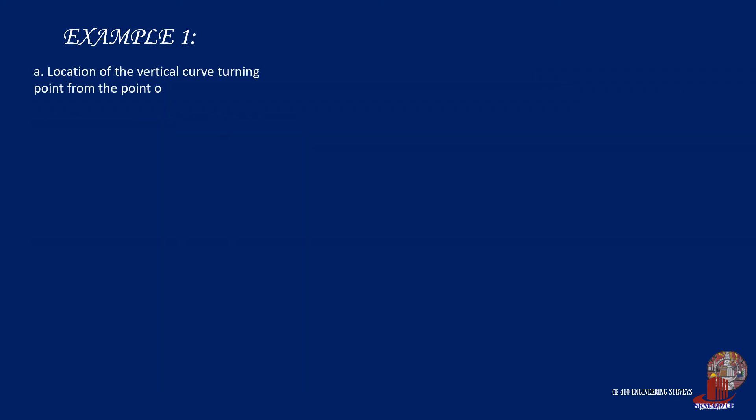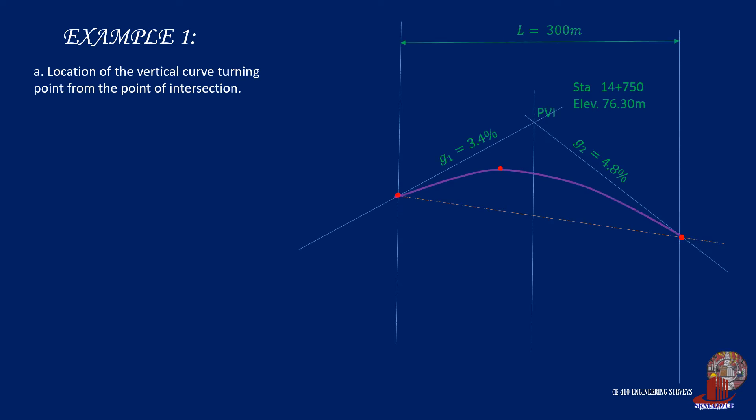Requirement A is the location of the summit, which is illustrated using the grade diagram. By connecting positive 3.4% to negative 4.8%, the point of inflection is taken at a distance less than half of L. This point would give the location of the summit of the curve.